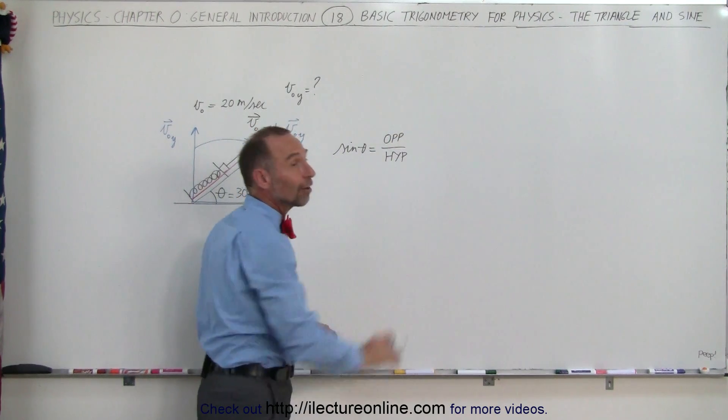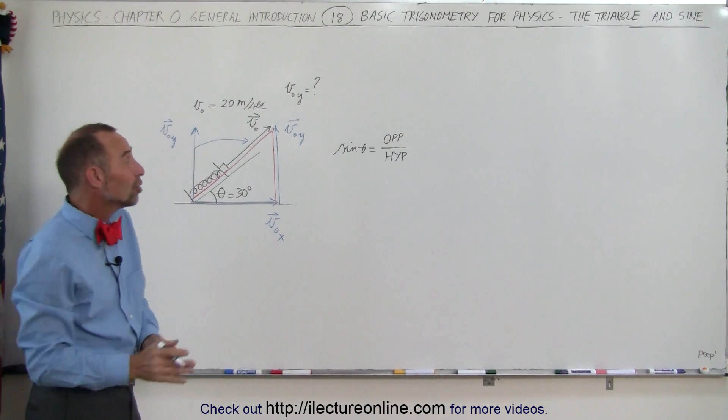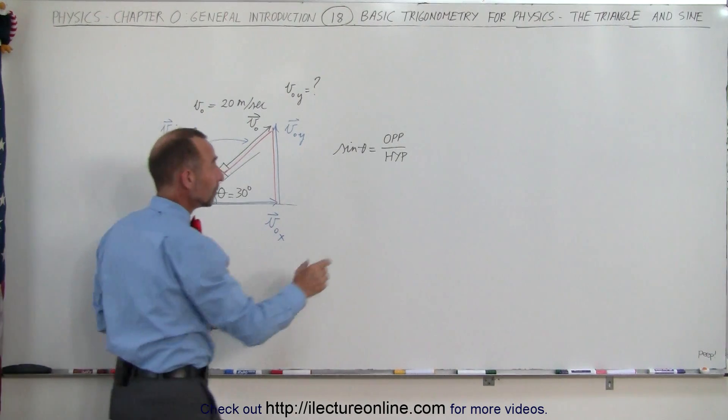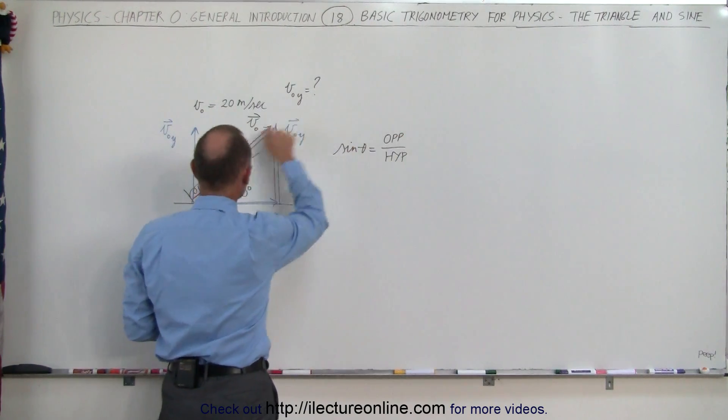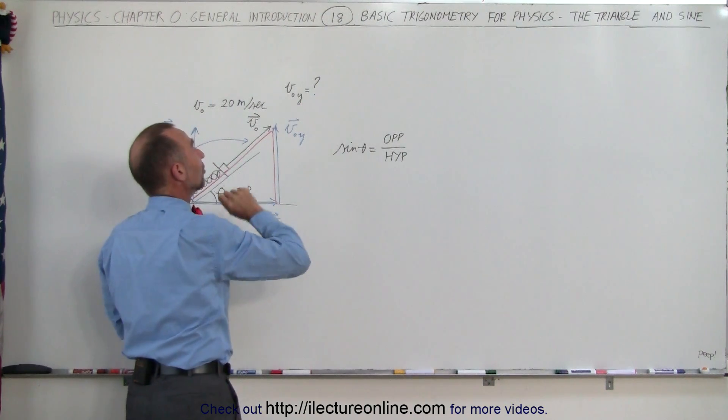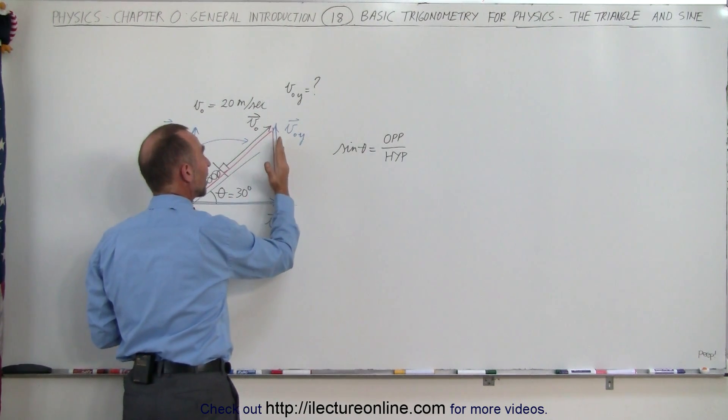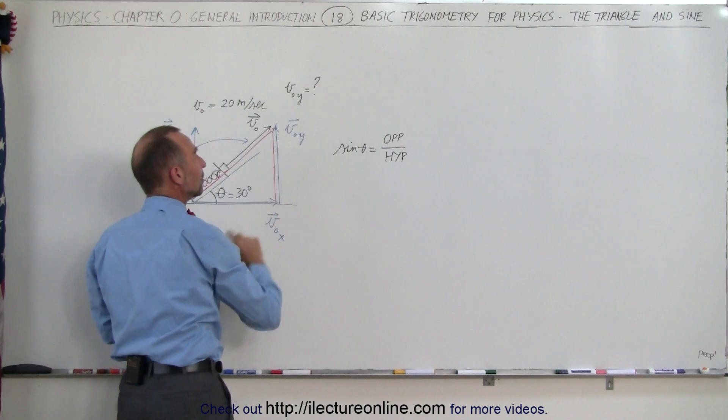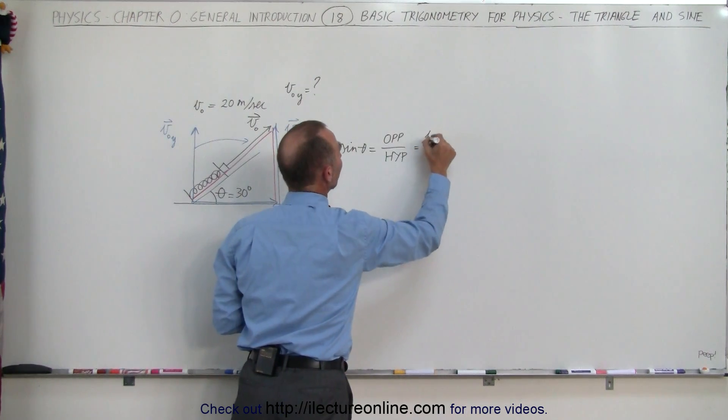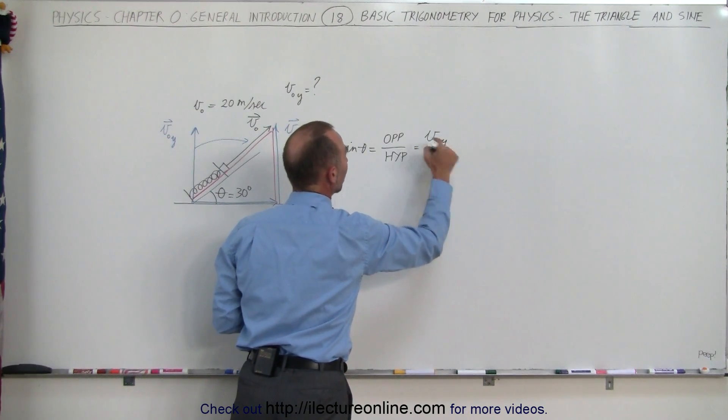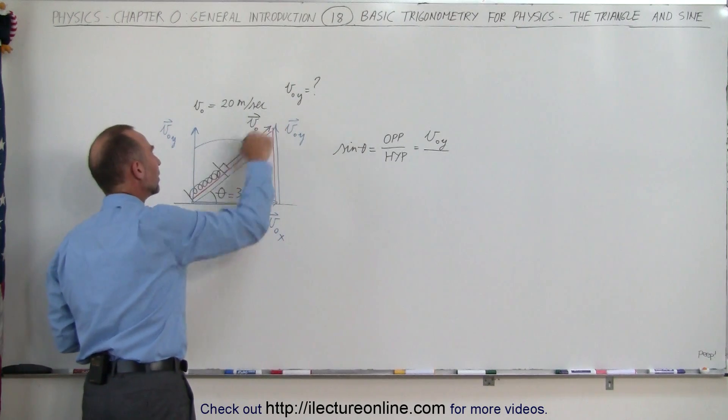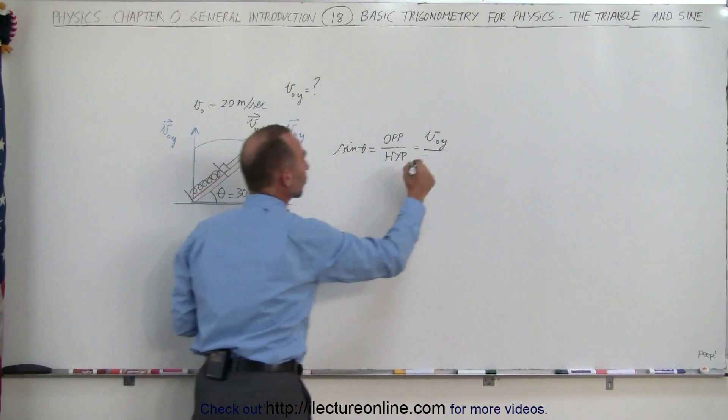So I always would like to start out by writing this definition down. Now the only thing left to do is recognize what the opposite side is in this case and what the hypotenuse is in this case. So the opposite side is the magnitude of v sub nought y. So this would be equal to v sub nought in the y direction, the initial velocity in the y direction. And the hypotenuse is equal to simply the initial velocity.